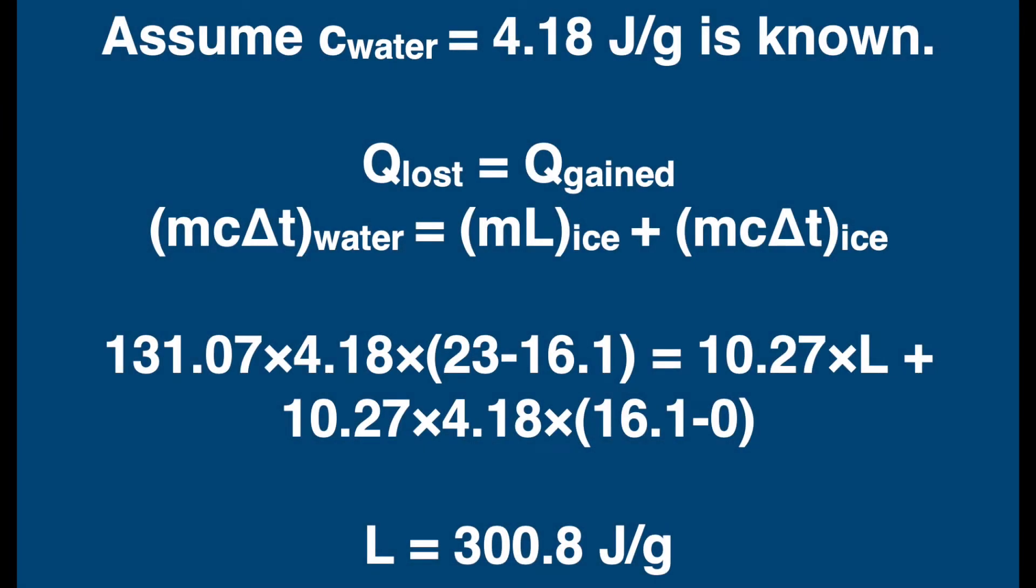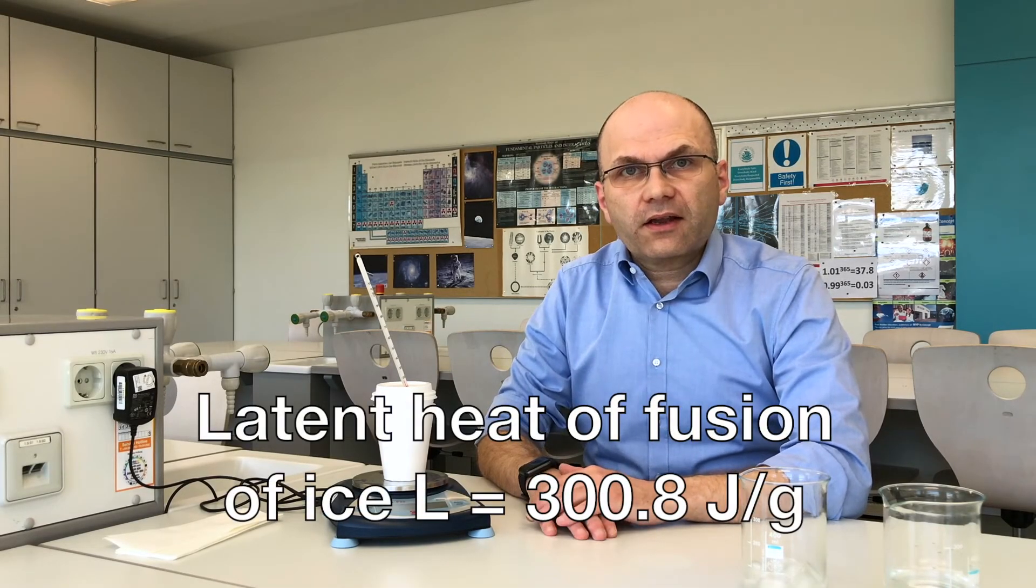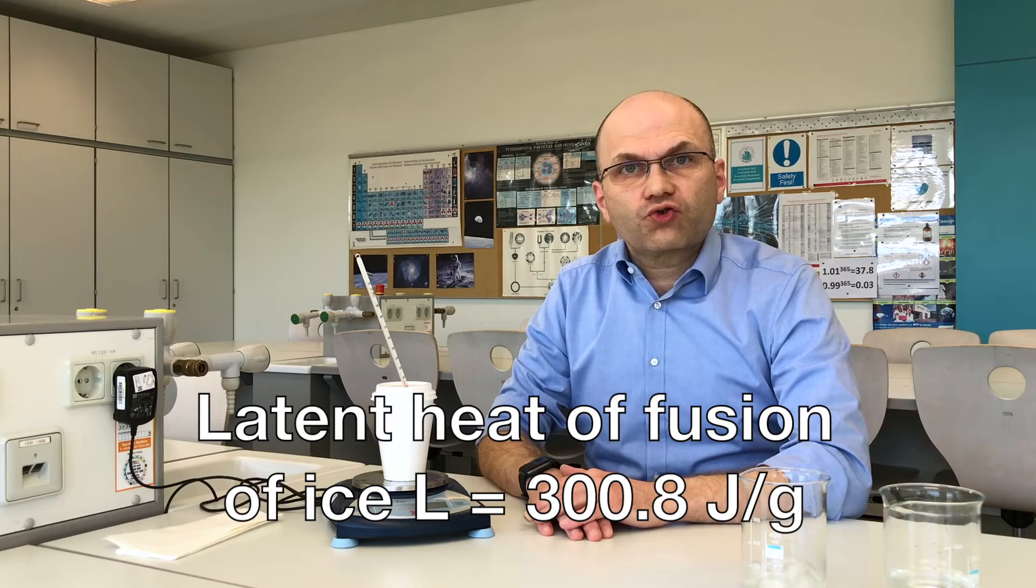The equations used to calculate the latent heat of fusion of ice are shown on the screen. The result is L equals 300 joules per gram.